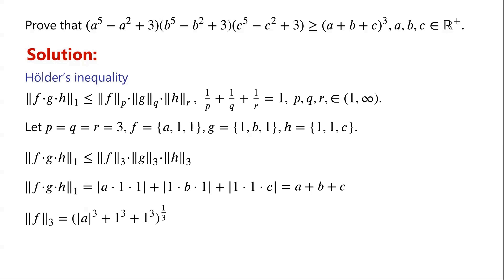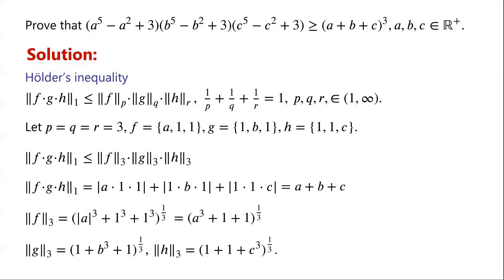The 3-norm of F equals (|A|³ + 1³ + 1³)^(1/3). Since A > 0, this equals (A³ + 1 + 1)^(1/3) = (A³ + 2)^(1/3). Similarly, the 3-norm of G equals (1 + B³ + 1)^(1/3), and the 3-norm of H equals (1 + 1 + C³)^(1/3).